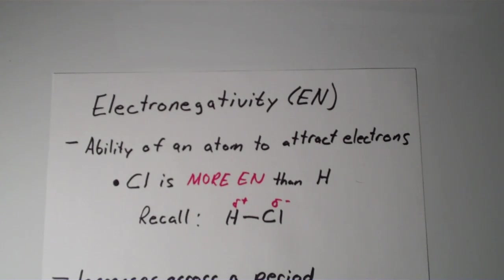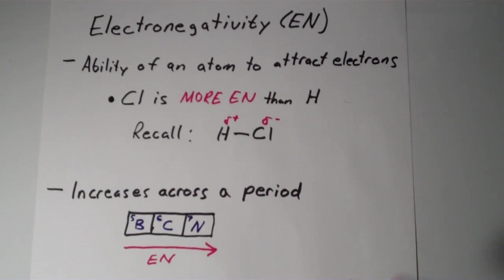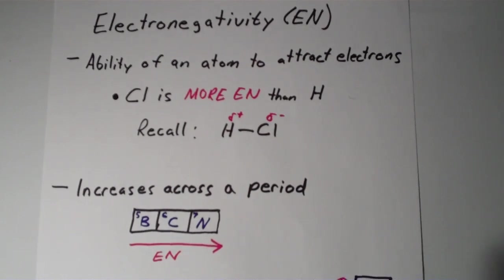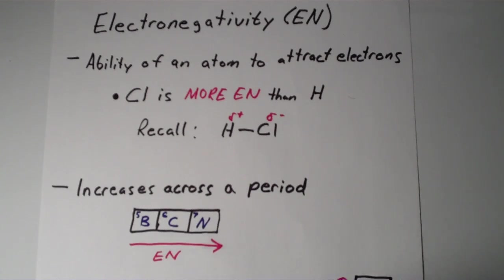A couple of general rules of thumb on electronegativity. First of all, electronegativity increases across a period in the periodic table. If you go from left to right across a row in the periodic table, for instance, if you go from boron to carbon to nitrogen, the electronegativities are increasing as you go from left to right. Nitrogen is more electronegative than carbon, which is more electronegative than boron.